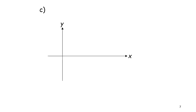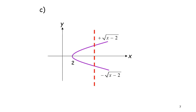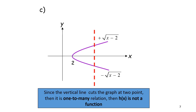For this graph, when we do the vertical line test, it cuts at two points. Therefore, it is not a function, and it is also a one-to-many relation.